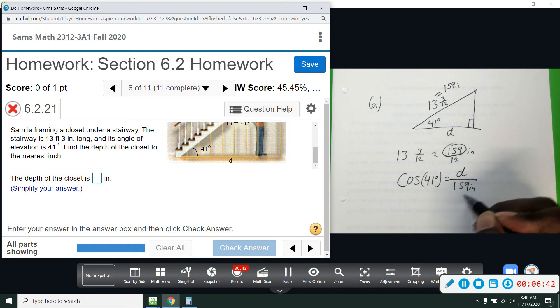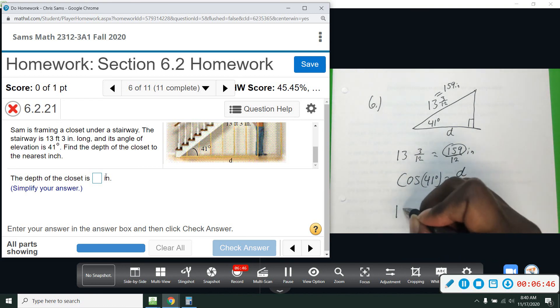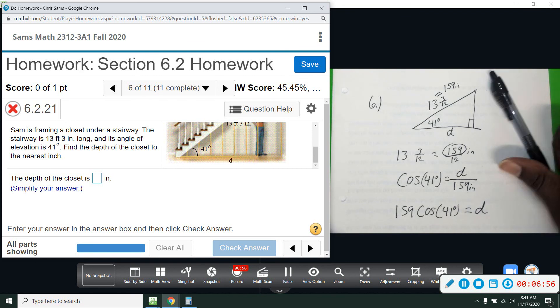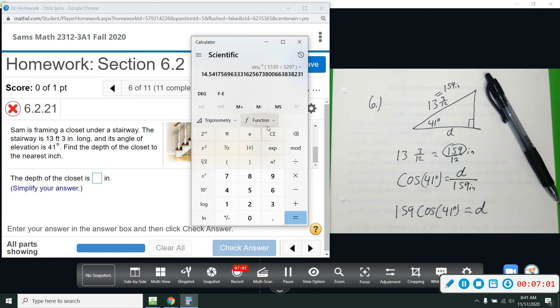Alright. To solve for D, we just need to multiply the 159 and move it over. So 159 times cosine of 41 gives us D. Alright. And then we're just going to compute this.